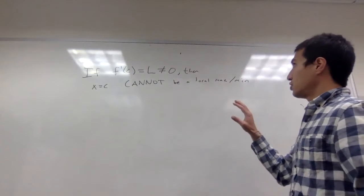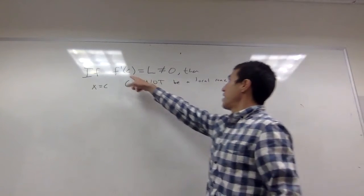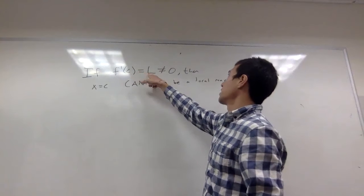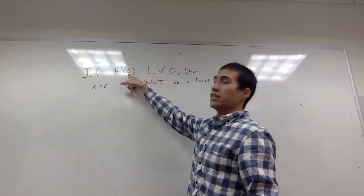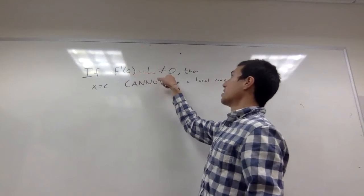Okay, so in this video, I want to say that if the derivative exists, so f'(c) = L, so the derivative exists at this point c, and L is non-zero.